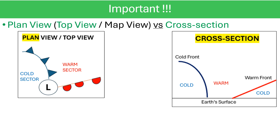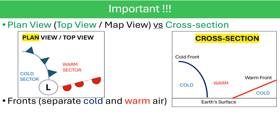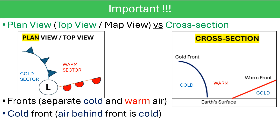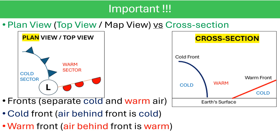It is what you would see on a synoptic chart. The examiner could also ask you to draw a cross-section through the mature stage of a mid-latitude cyclone. In this case, it is equivalent to standing on the surface of the earth and looking at the weather system from the side. Please remember that fronts are only there to separate cold and warm air, as shown on both the plan view and the cross-section. Additionally, remember that the air behind a cold front is cold and that the air behind a warm front is warm.